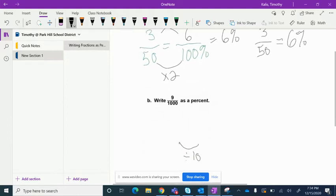Now question number two gives us 9 one-thousands. So we have to find a fraction that's equivalent to 9 one-thousands that has a denominator that is 100 because 100 is 100% so 9 over 1000 equals something over 100.